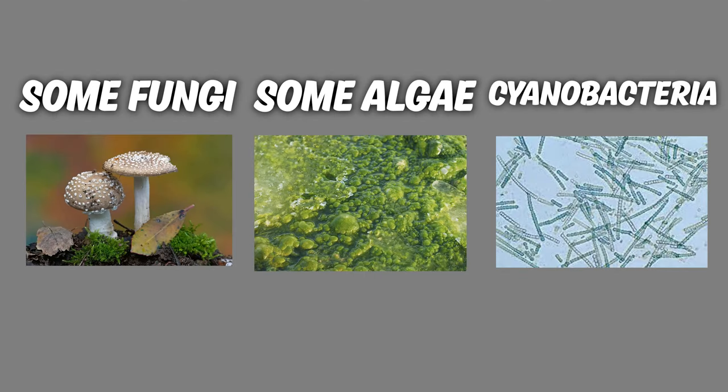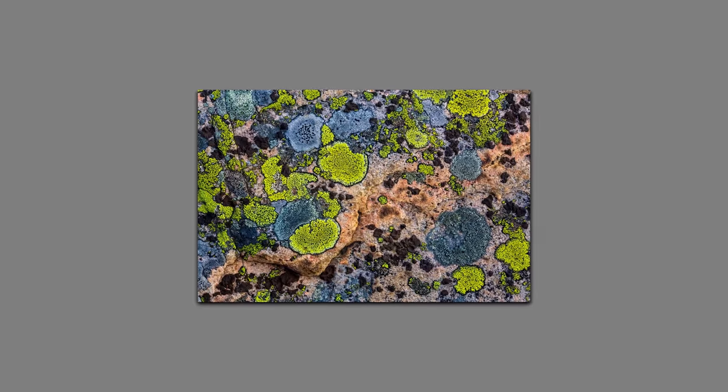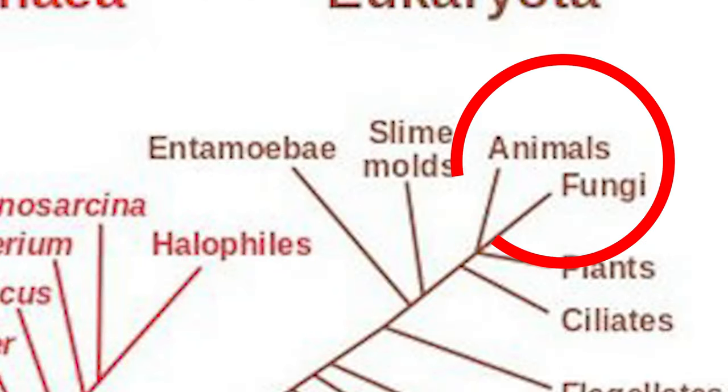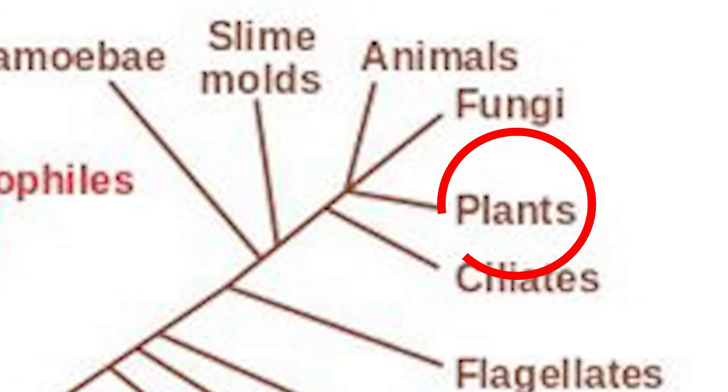Some fungi, some algae, some cyanobacteria, merging and evolving together to form something with great complexity. The term used to describe this relationship is called symbiosis. But lichen is not just a mix of any random species — instead, the relationship lichen has is called an inter-kingdom relationship: a relationship between at least two species from two or more separate kingdoms as seen in the tree of life. Looking closer at the tree of life, the common ancestor between animals and fungi split later than its common ancestor split with plants — meaning fungi is more closely related to every animal ever, including humans, than they are to plants.